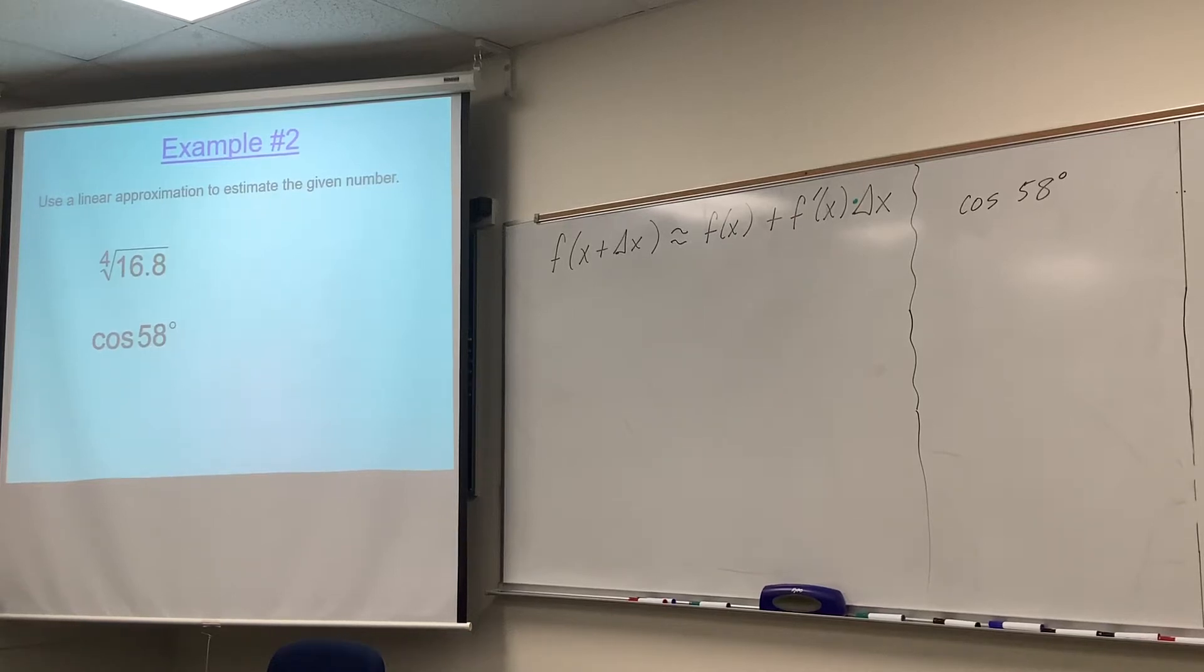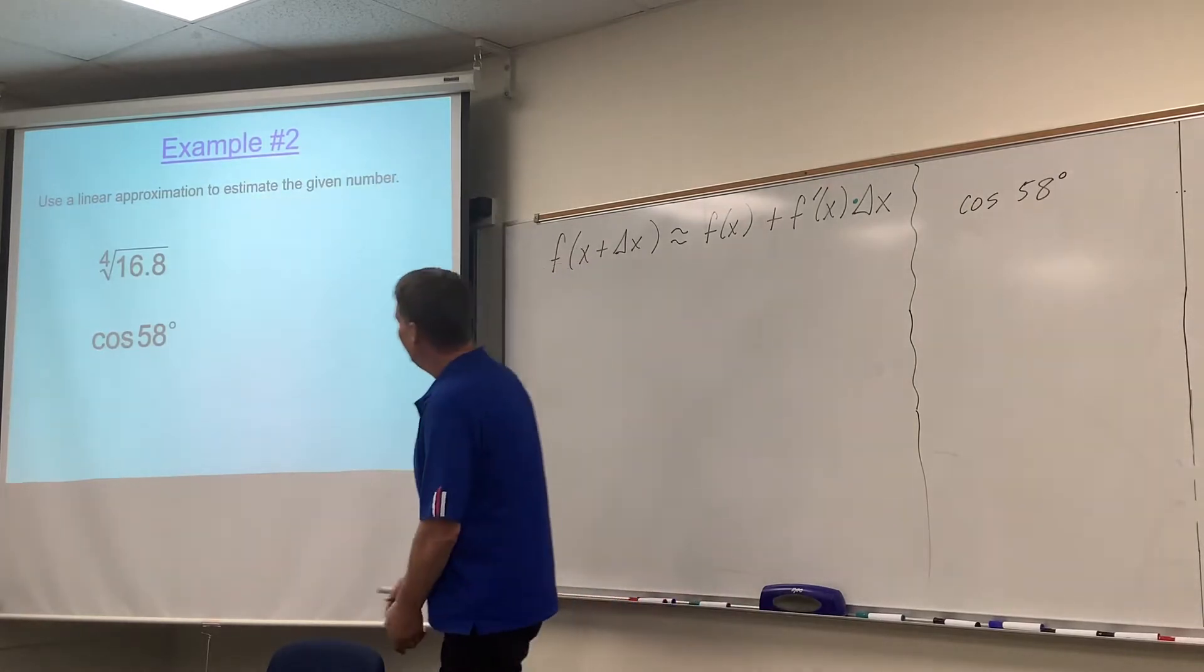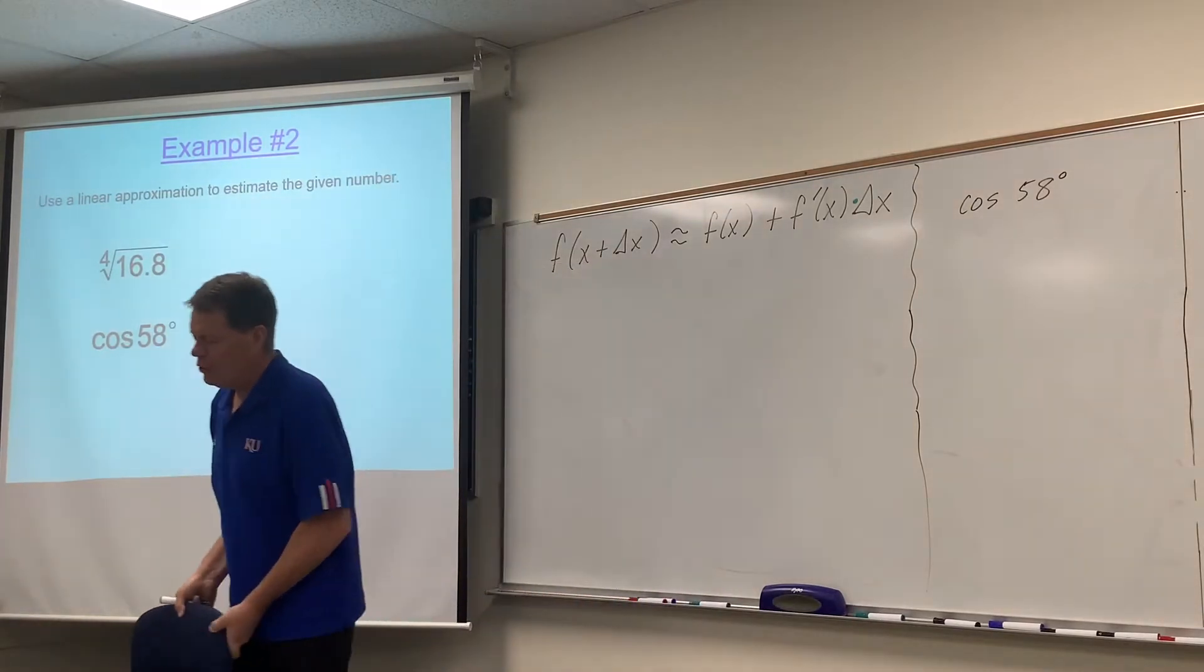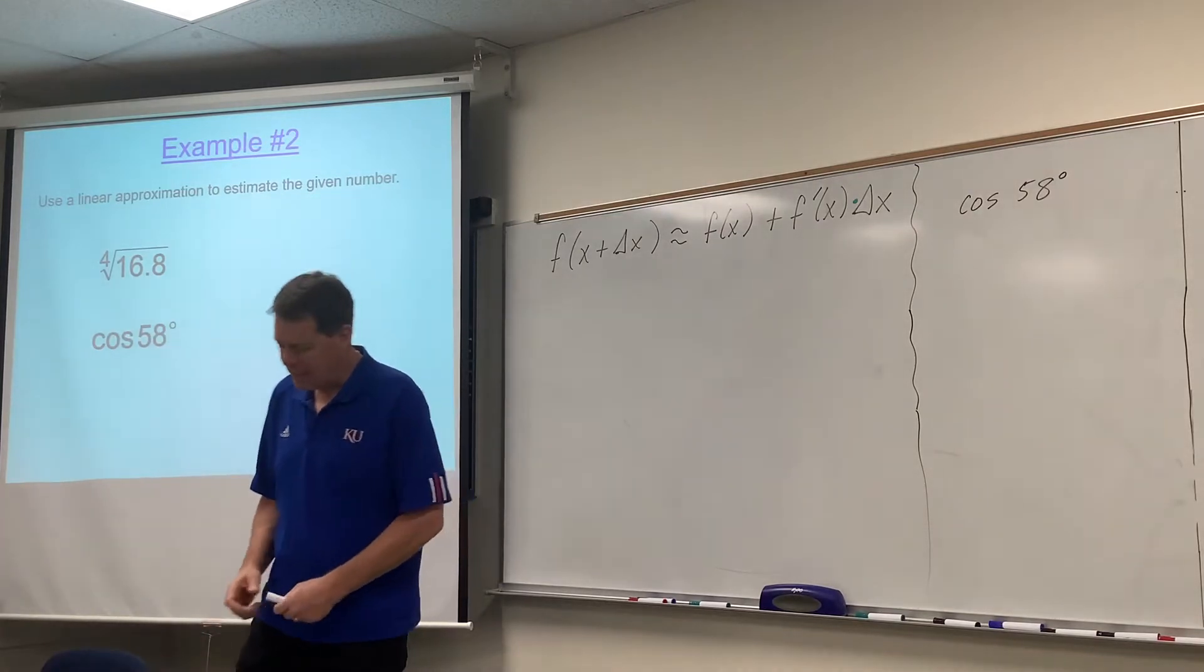Alright, here we go with differentials. Example 2b. We're going to use linear approximation to come up with an approximate value for the cosine of 58 degrees.